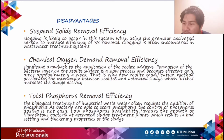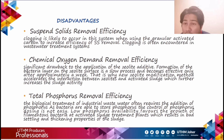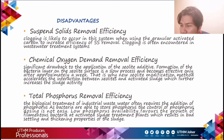The biological treatment of industrial wastewater often requires the addition of phosphorus, as bacteria are able to store phosphorus. The control of phosphorus loading is not easy, and low phosphorus availability favors the growth of filamentous bacteria in activated sludge treatment plants, resulting in poor settling and thickening properties of the sludge.